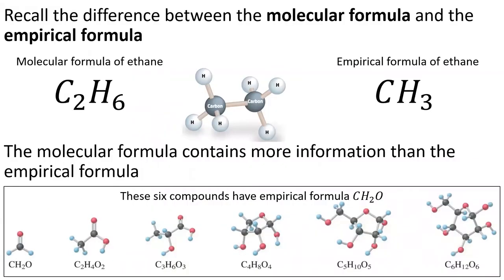Recall from section 2.6 that there are two formulas for molecular compounds. The molecular formula shows how many of each atom are in a molecule. The empirical formula is the molecular formula divided by the lowest common denominator.